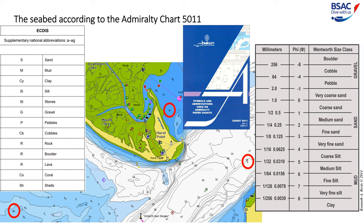Mariners are interested in this information as it could be picked up as a seabed sample on the tallow at the bottom of a lead and string sounder. For classification purposes, shells are really classified as an animal remain rather than a mineral. Admiralty uses a classification method called the Wentworth grain size classification, which ranges from boulders of 26 centimetres across to clay, which has a particle size of less than 1/256 of a millimetre. What is important to note is that boulders, cobble and pebble are classified as gravel. There are a number of grades of sand from very coarse to very fine, and mud is made up of grades of silt and clay.